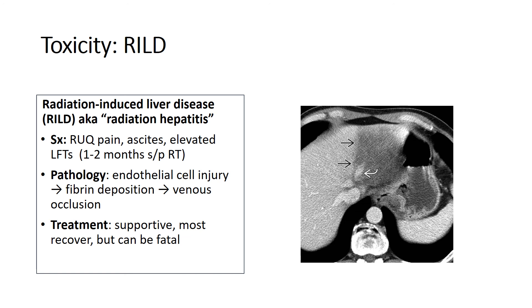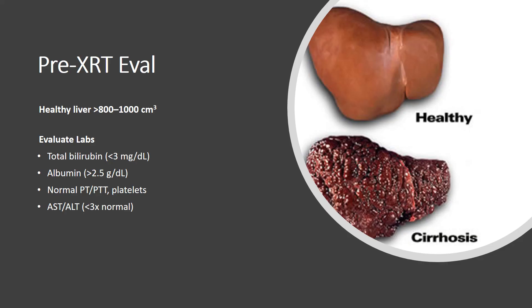The toxicity we worry about when irradiating the liver is radiation-induced liver disease, or radiation hepatitis. It presents like a hepatitis — right upper quadrant pain, ascites, elevated liver function tests — usually a month or two after radiation. It's caused by endothelial cell injury leading to fibrin deposition and venous occlusion. Treatment is mostly supportive, and while most patients recover, this can be fatal. We avoid it by selecting patients with a suitable volume of healthy liver — not cirrhotic liver — using labs and volumetric assessment, sometimes with advanced imaging to evaluate the true volume of functional liver.